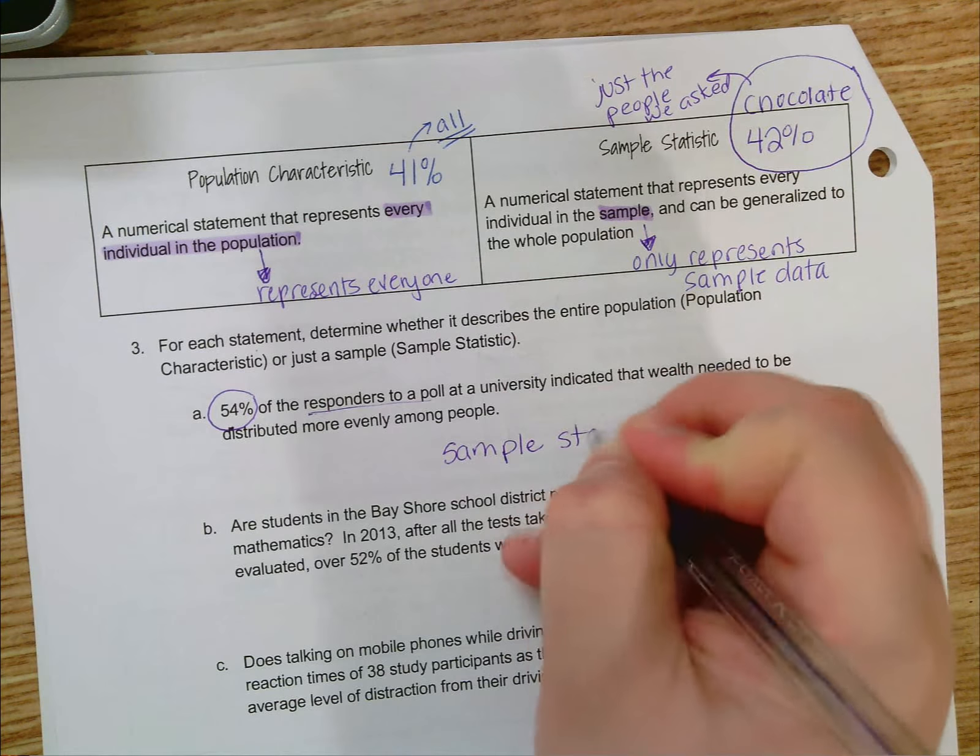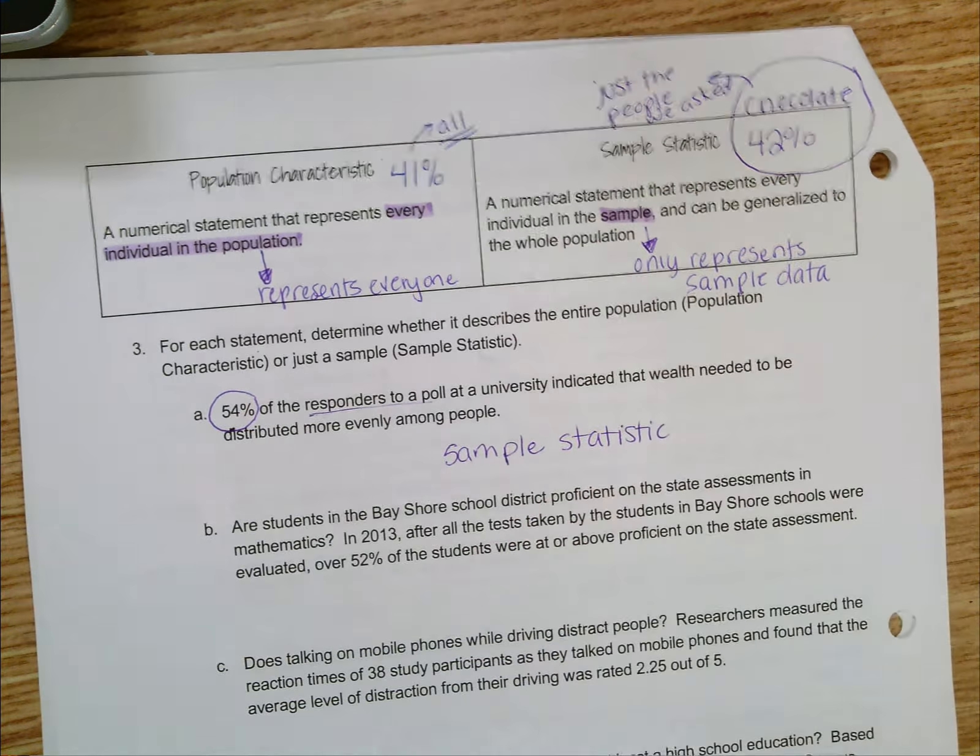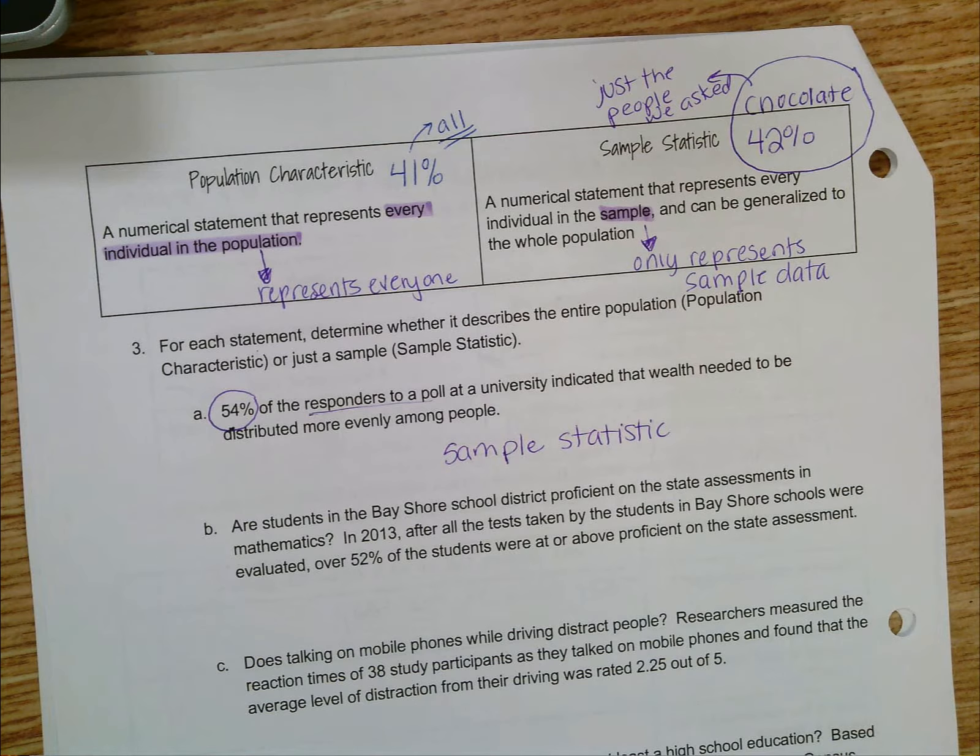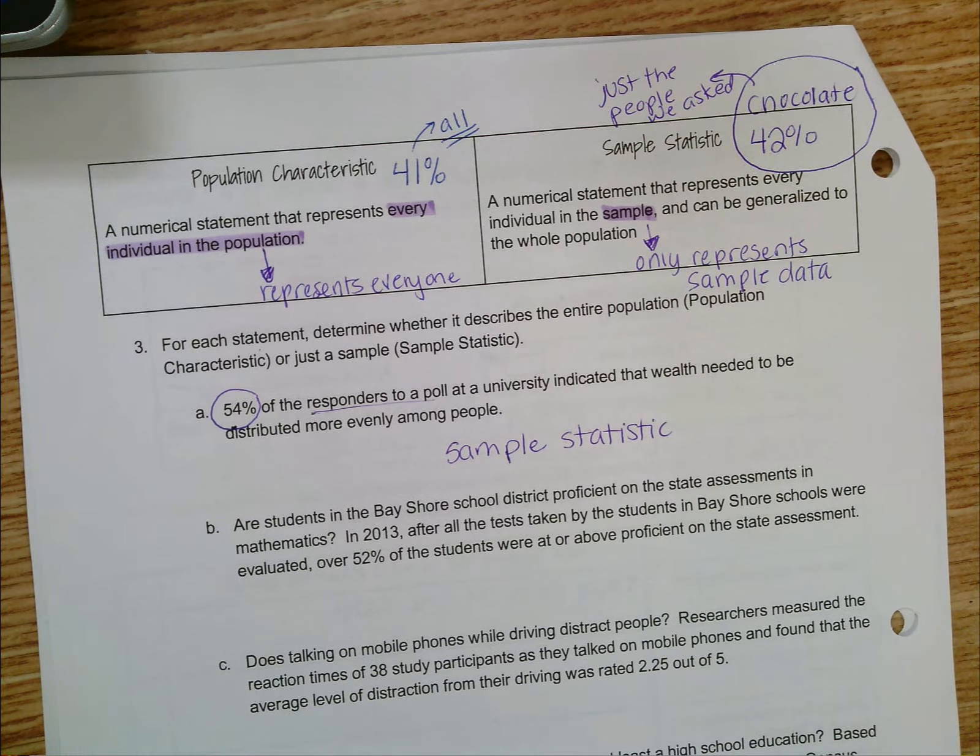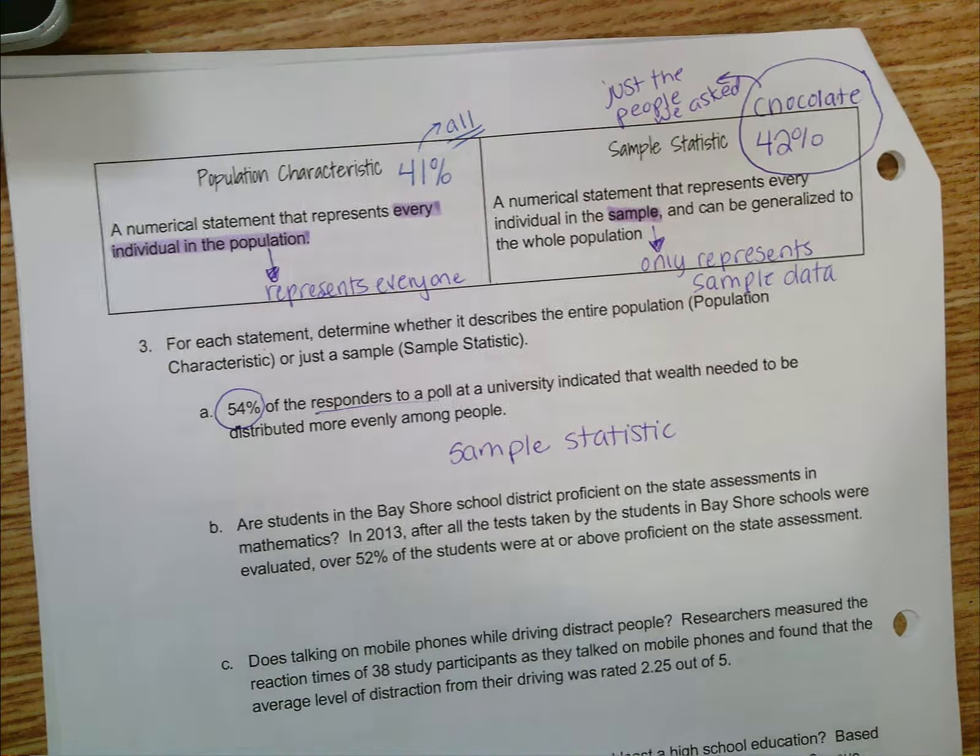this number is a sample statistic. It probably is fairly representative of the whole population, but we don't have any way of knowing that, so we call it a statistic rather than a characteristic. Please use this information to try the rest of number three with your partner before watching the next video.